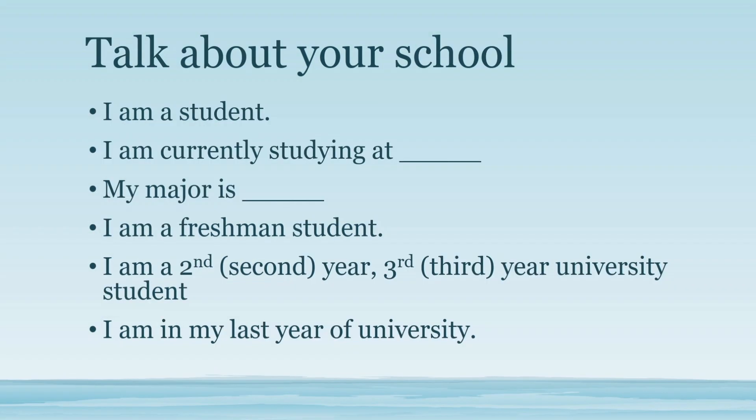Then you talk about your school, starting with: I'm a student. Currently, I'm studying at Ratchamankara University of Technology, Tanyaburi. My major is computer science. You can say I'm a freshman student, I'm a second year student, I'm a third year university student, or I am in my last year of university — it depends on what year you are in right now.